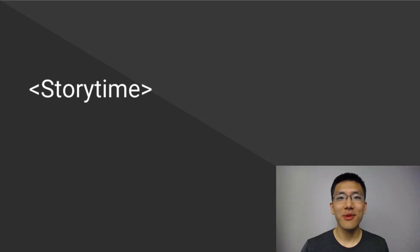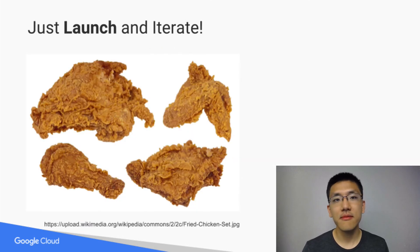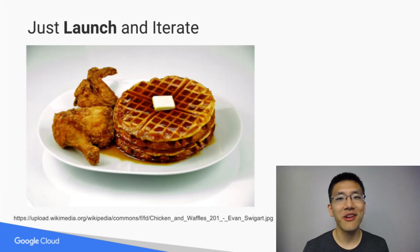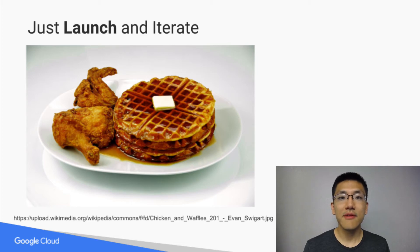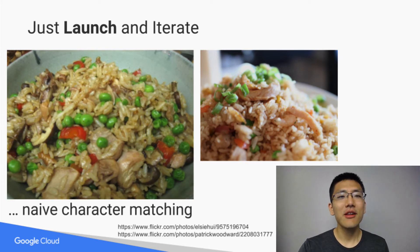Let's do a little thought experiment together. Say you're creating a hot new startup which aims to predict what its users want to eat. Someone says to the app, I want fried chicken, and they get, say, chicken waffles. Your V1 uses naive text matching, and when your users ask for fried chicken, they get chicken fried rice. Not exactly what they were looking for.